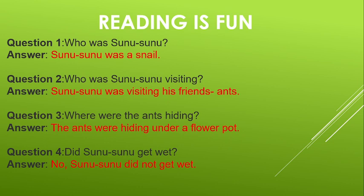And why didn't he get wet? Because he had a shell on top of him. The shell was round, like an umbrella, and quite hard. That's why Sunu-sunu the snail did not get wet.